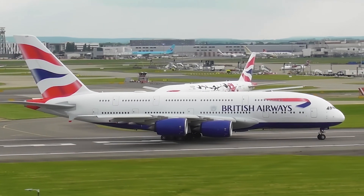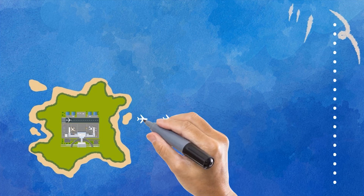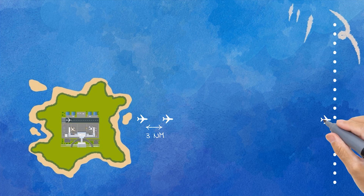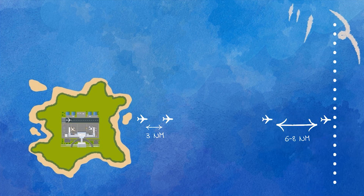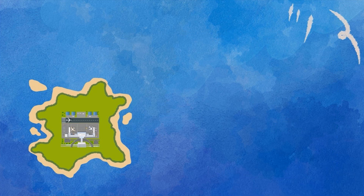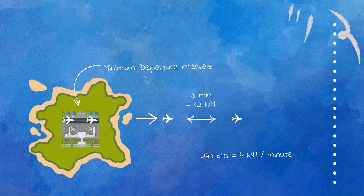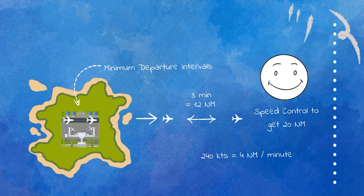What does this mean for departing traffic? Some delays, of course. Let's calculate. In most cases, a terminal radar controller can increase the gap between two consecutive departures from 3 miles to about 6 to 8 miles with speed control. If we need 20 miles between those departures, the terminal environment is usually too small for speed control alone — we still need about 12 extra miles. The easiest method is for the tower controller to apply minimum departure intervals. If an aircraft flies at 240 knots, it covers 4 miles per minute. With departures launched at 3-minute intervals, there should be roughly enough space for the radar controller to complete the job.